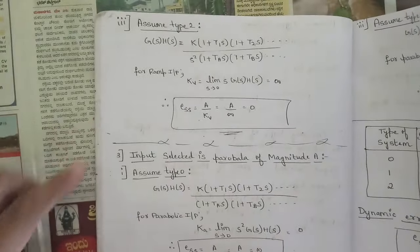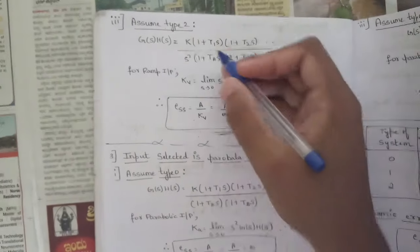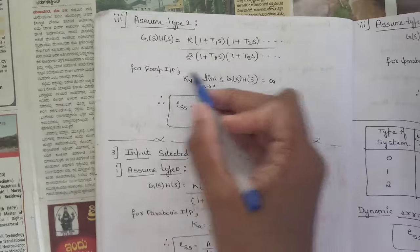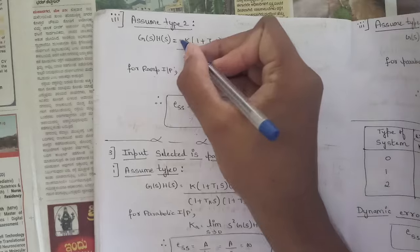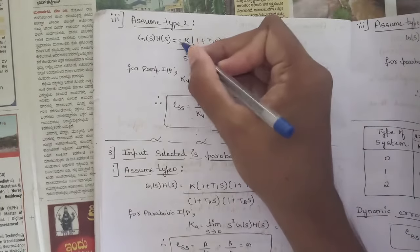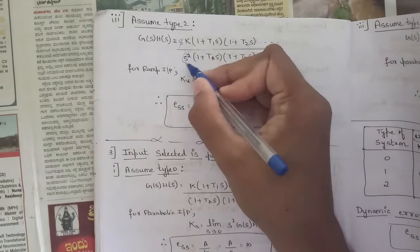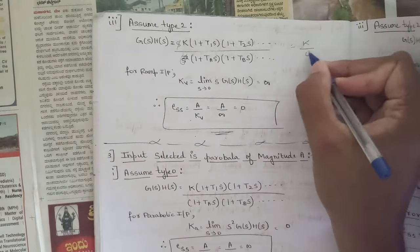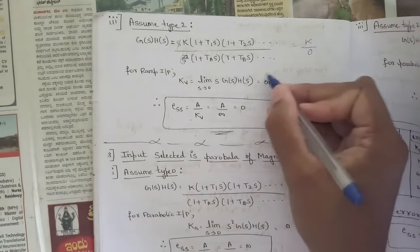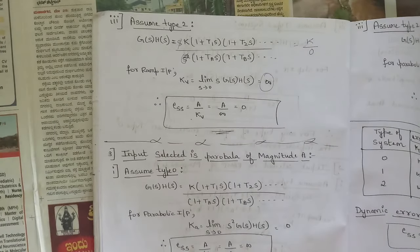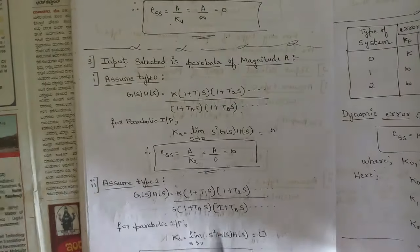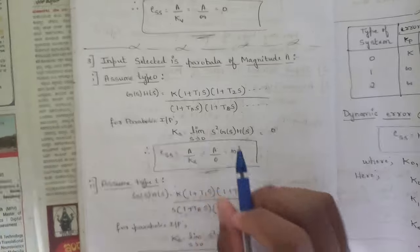For a Type 2 system with ramp input, j = 2, so the denominator has s squared. The expression kv = limit as s tends to 0 of s·k/s² = k/s. As s → 0, this gives k/0 = infinity. So kv = infinity, and the steady state error ess = a/infinity = 0.